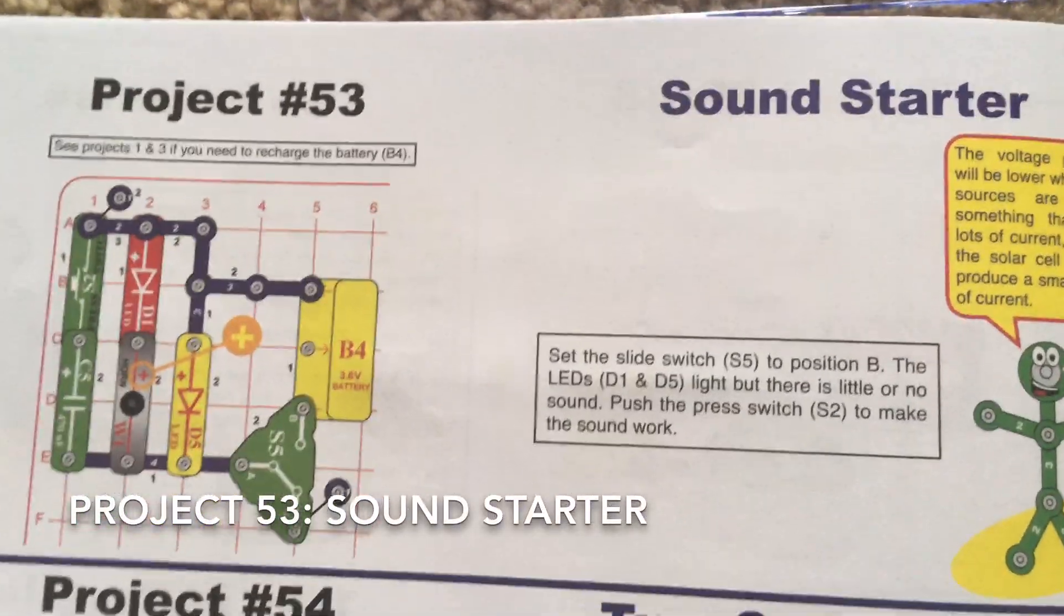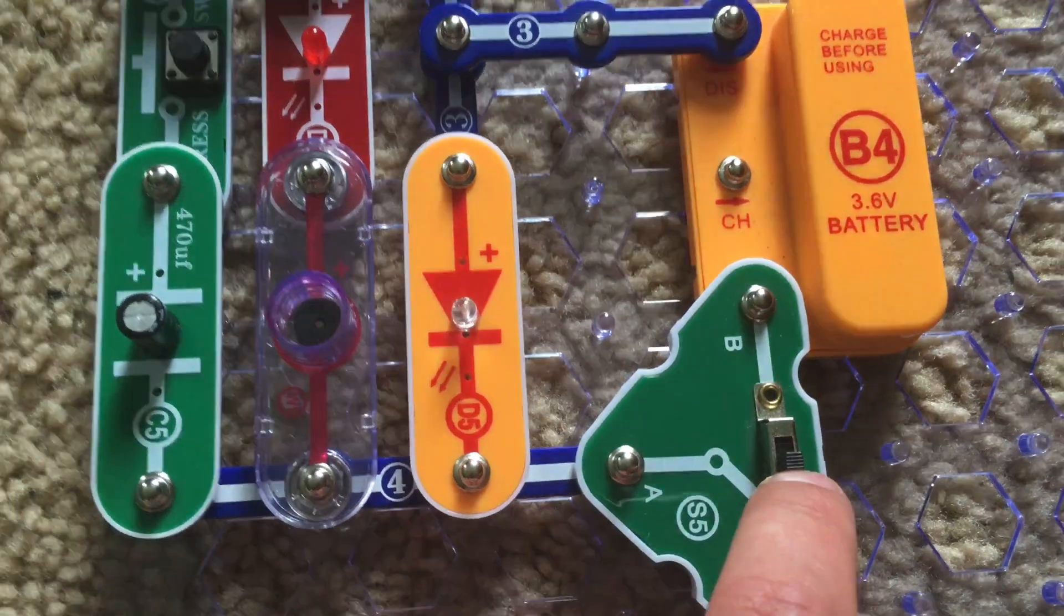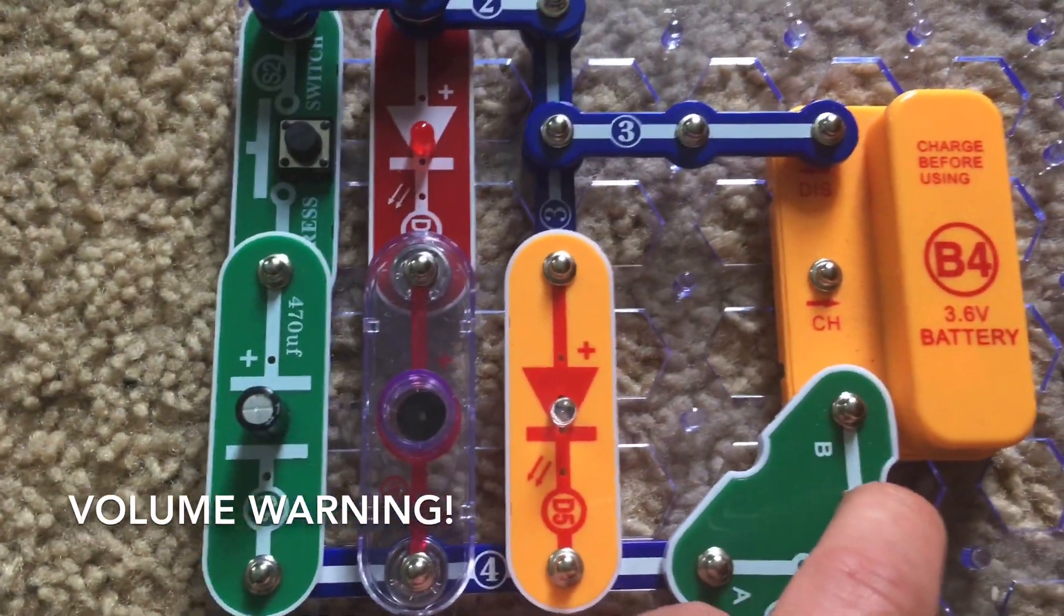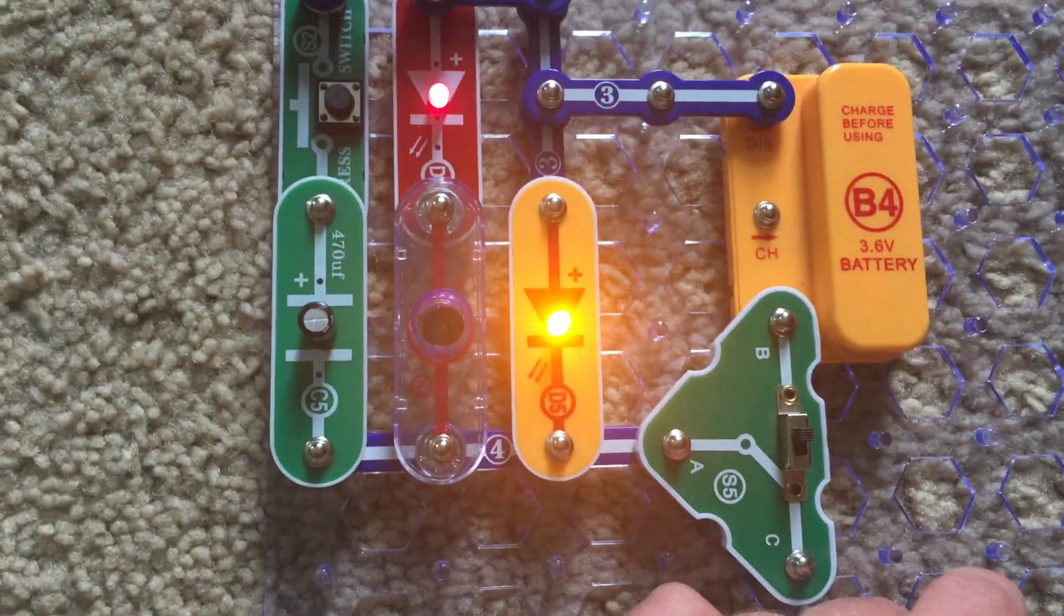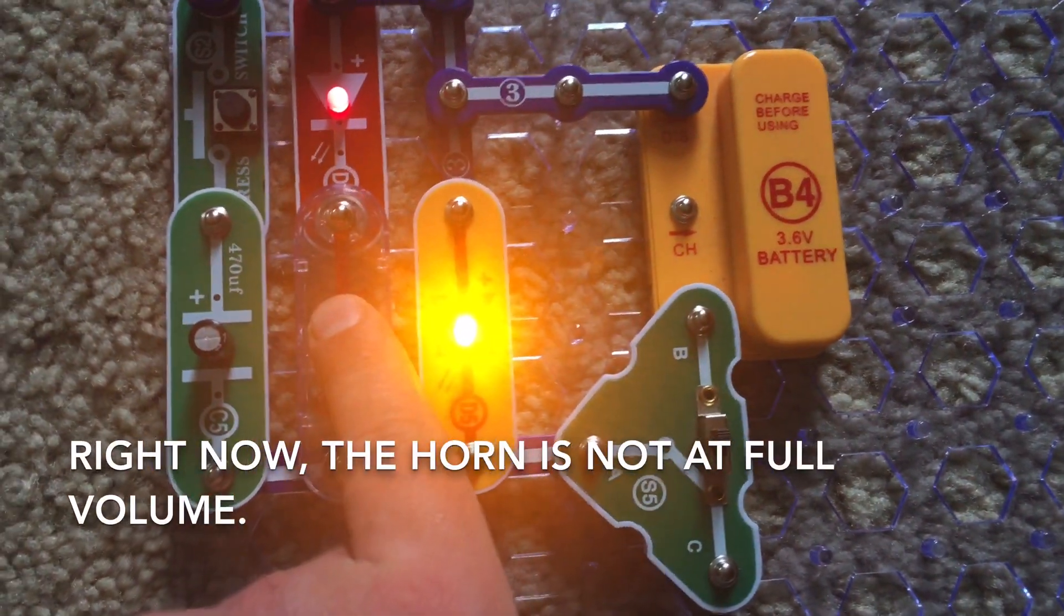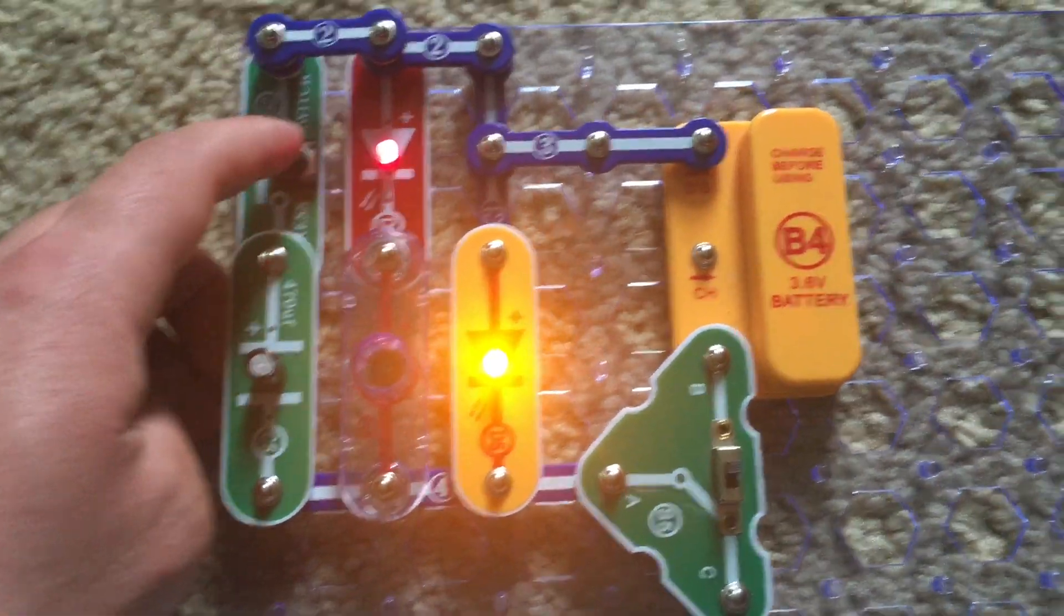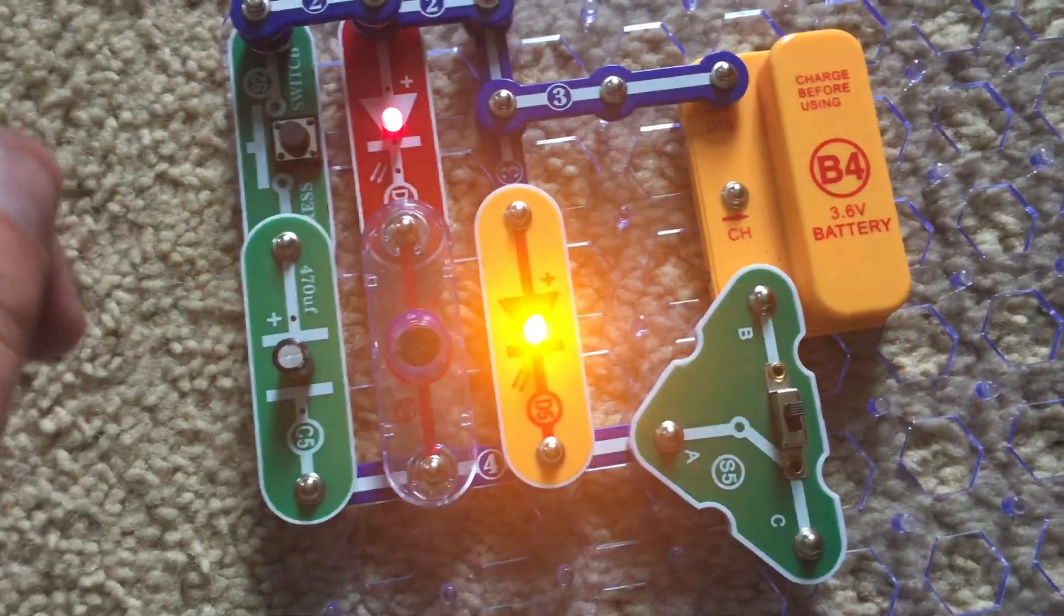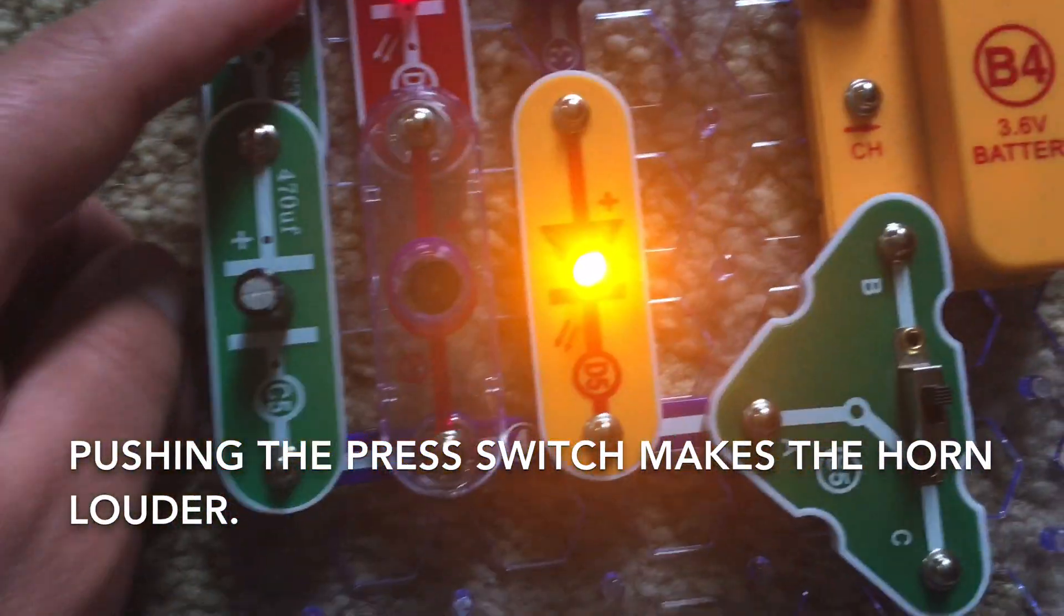For sound starter, we will turn on the slide switch, move it to position B, and while both LEDs come on, the horn will make little to no noise. It's pretty quiet, but when I push the press switch, volume warning please, the horn will become louder, even though not too loud.